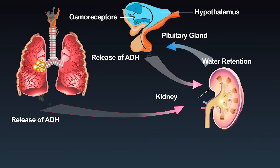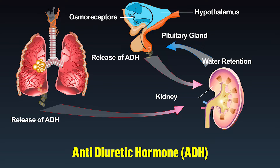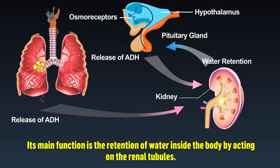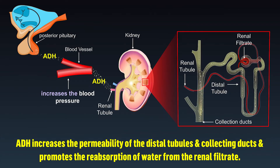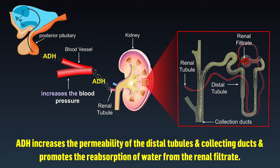Explain vasopressin. It is otherwise called as the anti-diuretic hormone, ADH. Its main function is the retention of water inside the body by acting on the renal tubules. ADH increases the permeability of the distal tubules and collecting ducts and promotes the reabsorption of water from the renal filtrate.